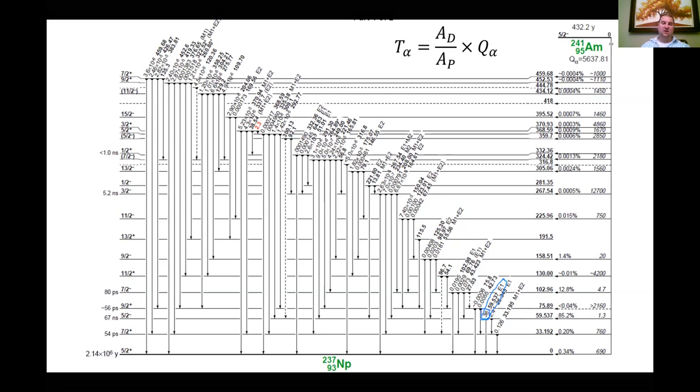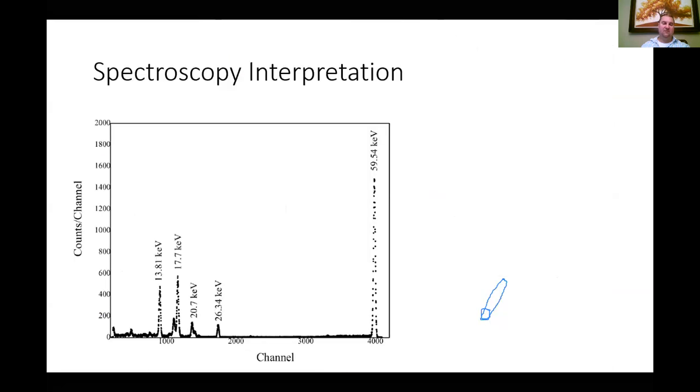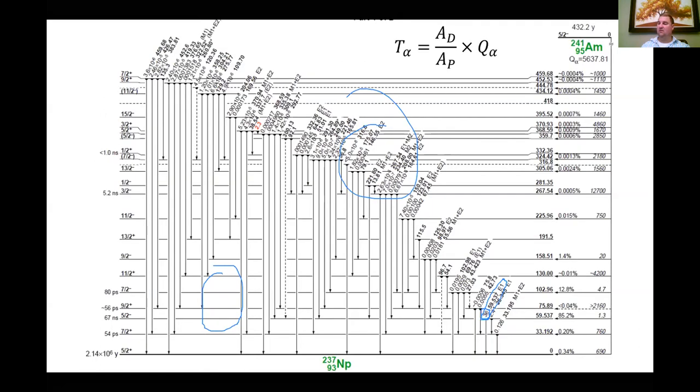And that's the reason why when you look at the spectrum, the 59.54 is so high. And here's this 26.3. Some of those other keVs on the spectrum here are probably associated with the backscatter and the x-rays, characteristic x-rays coming from the shield.